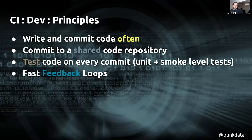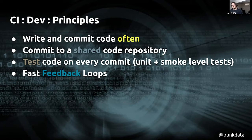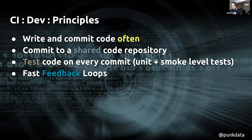Here are some of the principles for CI — continuous integration — which generally apply to developers. One of the benefits is you're writing and committing code often, taking that instead of waiting for other folks to finish their project. Developers can individually contribute at a pace suited to their work cadence. You're also committing to a shared code repository, so anyone who pulls those changes down can see what you're working on — no gotchas when everything is merged. And then you're testing code on every commit. The most favorite benefit for me is the fast feedback loops: knowing when things are broken before you commit them to any codebase.